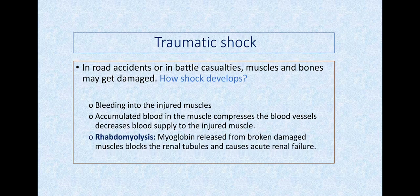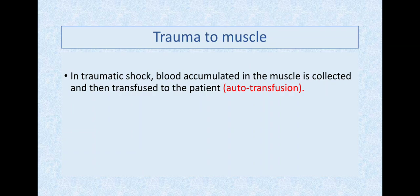Myoglobin released from damaged muscle blocks the renal tubule and causes acute renal failure, so the kidney has less GFR, less blood flow, oliguria, and uremia. What's the treatment? We try to auto-transfuse the blood—take blood out of the muscle and put it back in the blood vessel. We expect the person to get better with auto-transfusion.